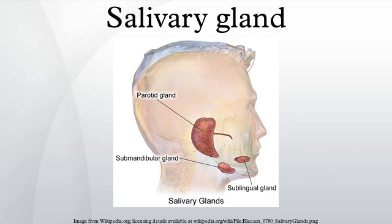The salivary glands are detailed below. Parotid glands: The parotid glands are a pair of major salivary glands wrapped around the mandibular ramus in humans. They are the largest of the salivary glands, and they secrete saliva to facilitate mastication and swallowing and to begin the digestion of starches.